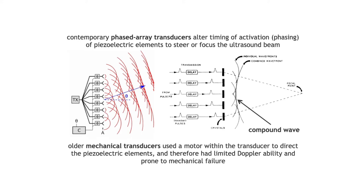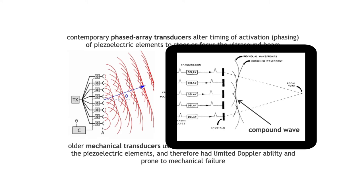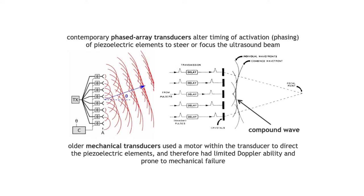This diagram shows how firing piezoelectric elements at the bottom of the transducer first and then delaying each subsequent activation produces a wavefront steered in an upward direction. Delaying activation of elements toward the center of the transducer creates a focal point. Older mechanical transducers used a motor to direct elements, giving limited Doppler ability and being prone to mechanical failure.